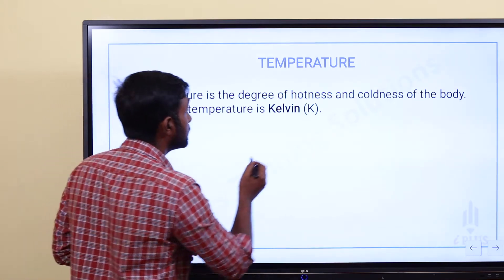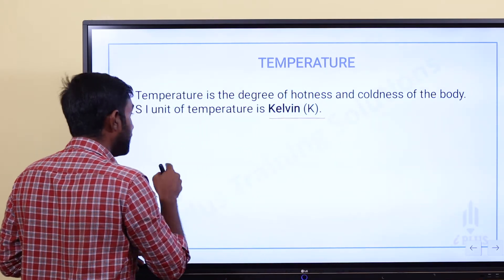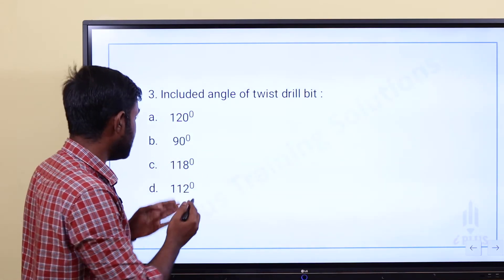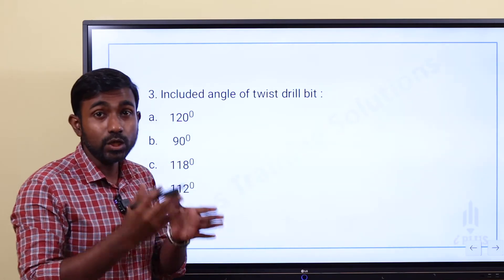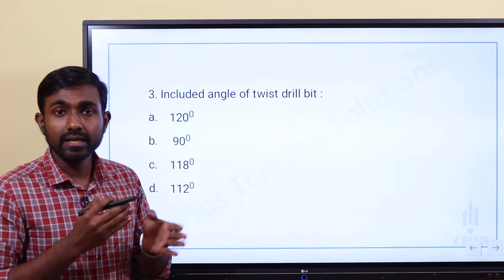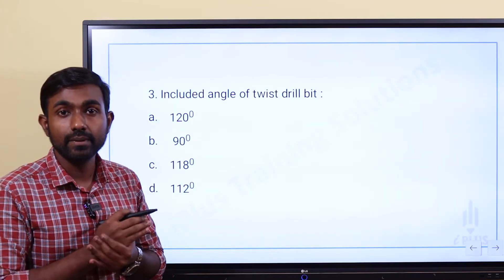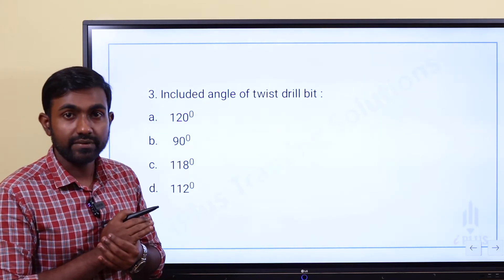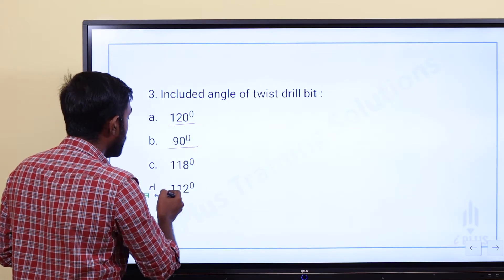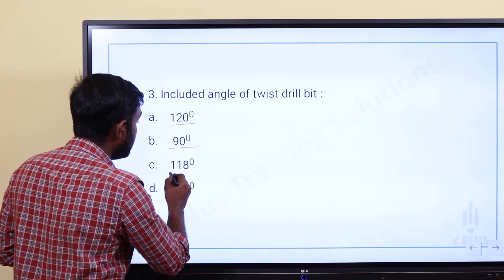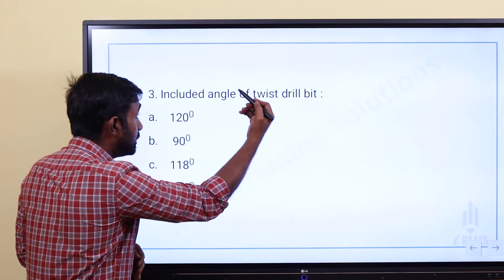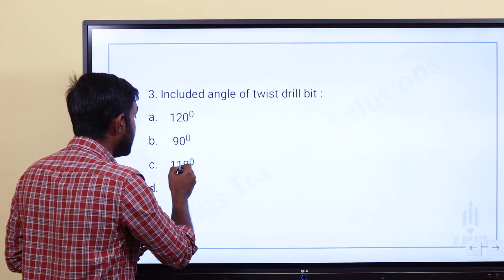Next, the included angle of a twisted drill bit. We have a standard angle for the drill bit. Option A: 120 degrees, Option B: 90 degrees, Option C: 118 degrees, Option D: 112 degrees. The standard included angle of a twisted drill bit is 118 degrees.